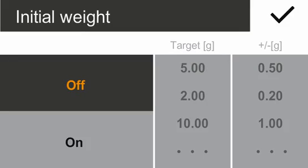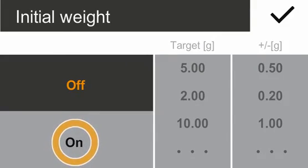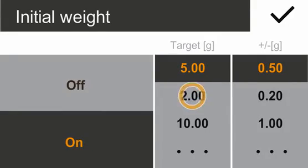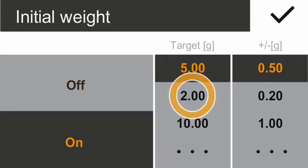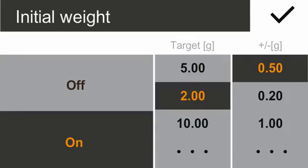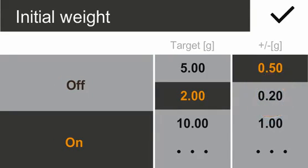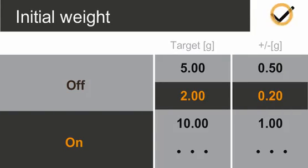Please tap On. Select 2 grams as the target weight and 0.2 grams as tolerance. Confirm your selection by tapping on the hook button.